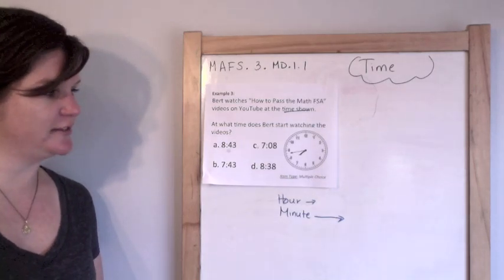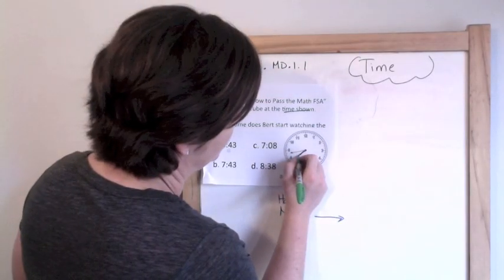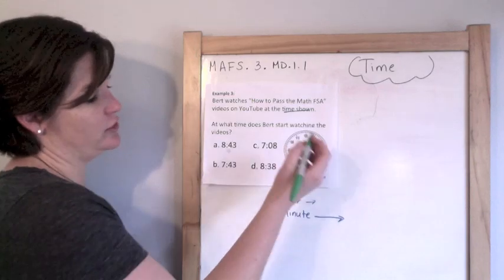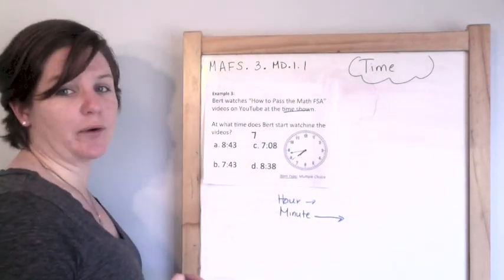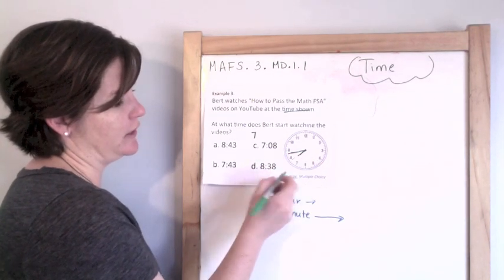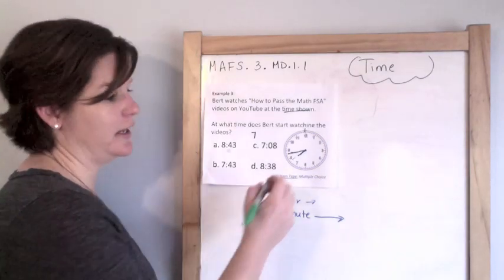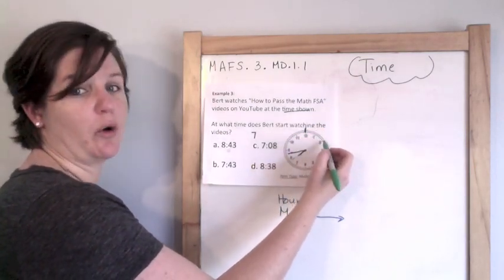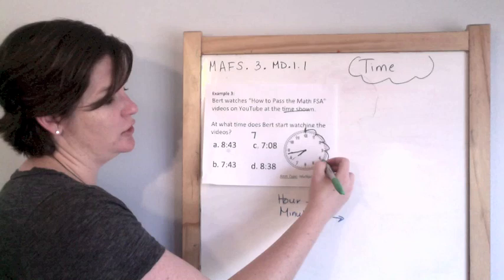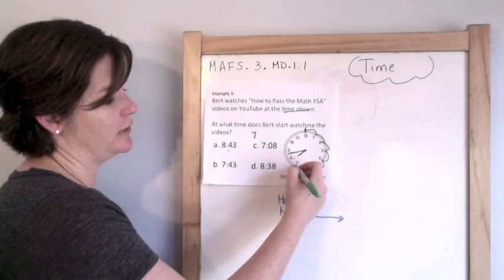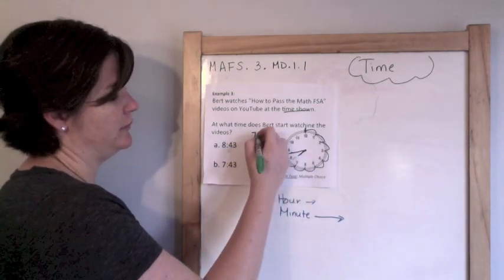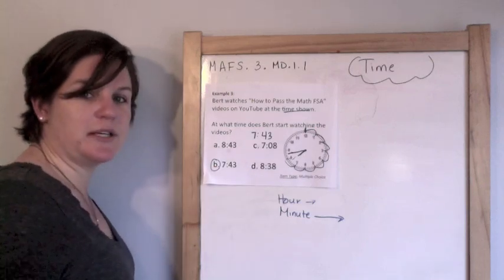So first I locate my hour. My hour hand looks like it is almost at the 8 but not quite at the 8. So it looks like we are still in the 7 o'clock hour. Then I take a look at my minute hand, which is a little bit longer. I start at the top at the 12 and for the minutes, each time I get to one of the whole numbers I count by 5s. So we have 5, 10, 15, 20, 25, 30, 35, 40. Now count by 1s: 41, 42, 43. So 7:43, which means B is your answer.